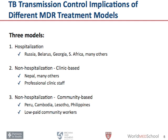Non-hospitalization can be divided into clinic-based and community-based. Examples of clinic-based are Nepal, but there are many others. Clinics are professionally staffed. Community-based treatment programs are found in Peru, Cambodia, Ussutu, and the Philippines. The key component there, although nurses and doctors are of course involved, is the presence of low-paid or in some cases volunteer community workers.